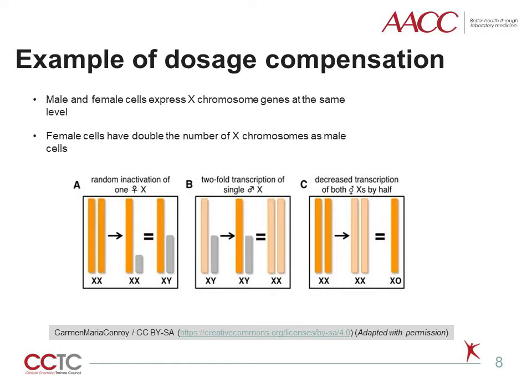Dosage compensation is a way to equalize or balance the expression of genes. For example, dosage compensation can be seen in sex chromosomes. Female cells have double the number of X chromosomes as male cells, so female cells should express twice the amount of X chromosome genes more than male cells — but they don't. Male and female cells express X chromosome genes at the same level, because of dosage compensation, which can happen either by random X inactivation — where females shut off expression of one of the two X chromosomes matching male single X expression — or by twofold transcription of the X chromosome. One of the two X chromosomes is selected to be shut down early in development in a process known as X chromosome inactivation.